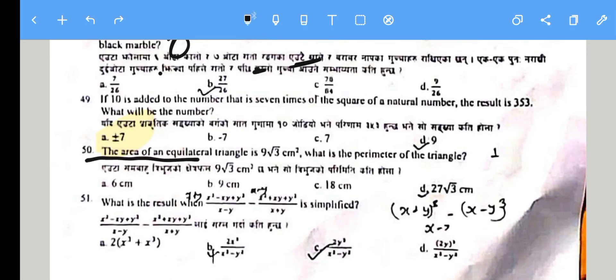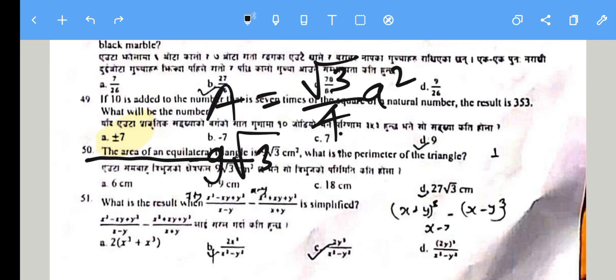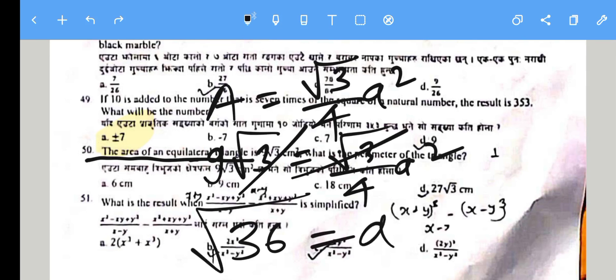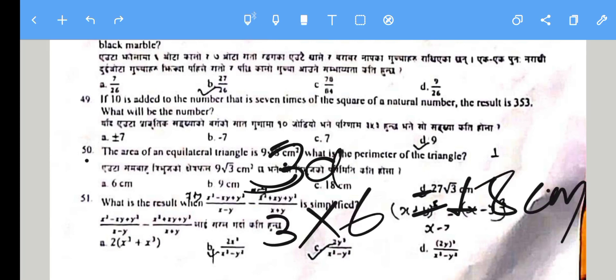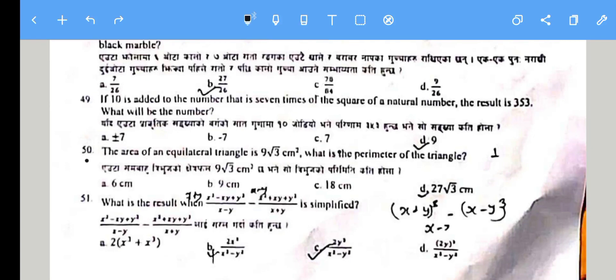Question 50: For an equilateral triangle with area 9√3, using the formula Area = (√3/4)a², we get a = 6. The perimeter is 3 × 6 = 18 cm. So 18 cm is the correct answer.